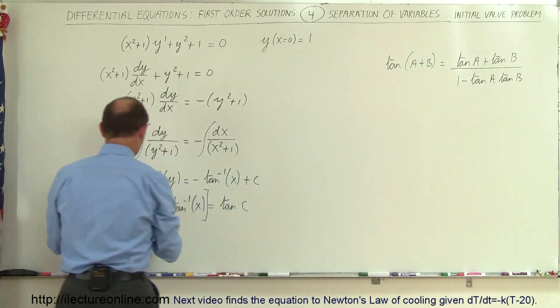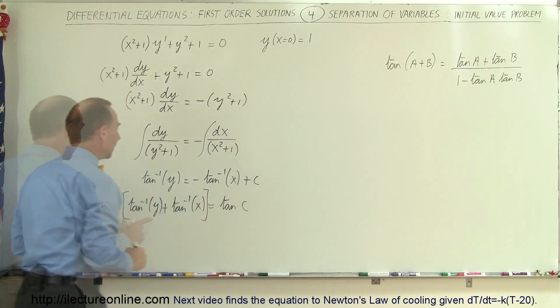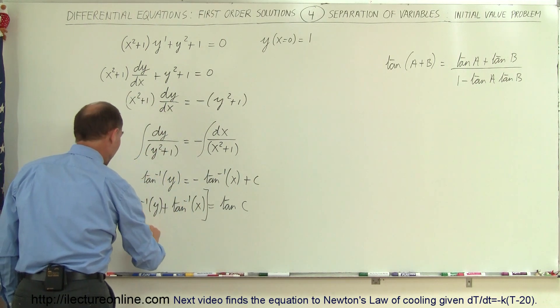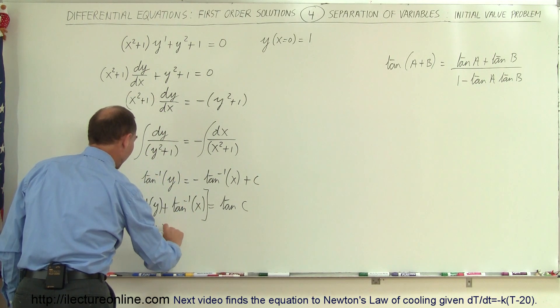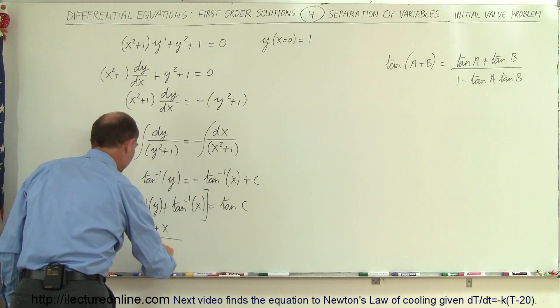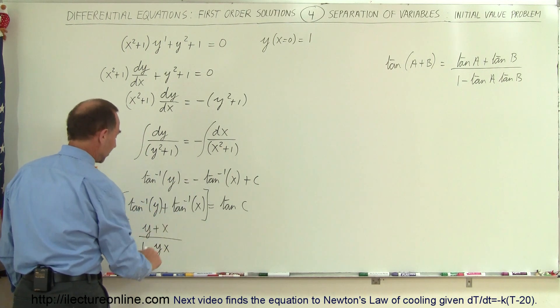plus the tangent of b divided by 1 minus the tangent of a times the tangent of b. Alright, so if you let this be a and this be b, so then you get,